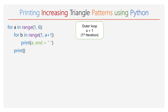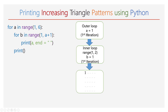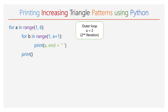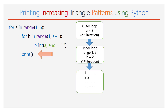During the first iteration, the value of a will be 1. The range of b is 1 to 2, so the inner for loop will iterate only one time. In the output, we use variable a — the value of a is 1, so you can see 1. Next, an empty print function is executed and the cursor takes a new line. Again, the execution goes to the outer for loop. The value of a will be 2, and the inner loop will iterate for 2 times. During each iteration, the number 2 will be printed.